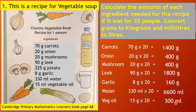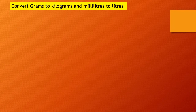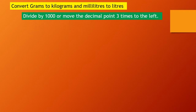Now, the next step is to convert the grams to kilograms and milliliters to liters. We are going to convert the amounts in grams to kilograms and the amounts in milliliters to liters. To convert grams to kilograms and milliliters to liters, we will divide by 1,000 or move the decimal point to the left.